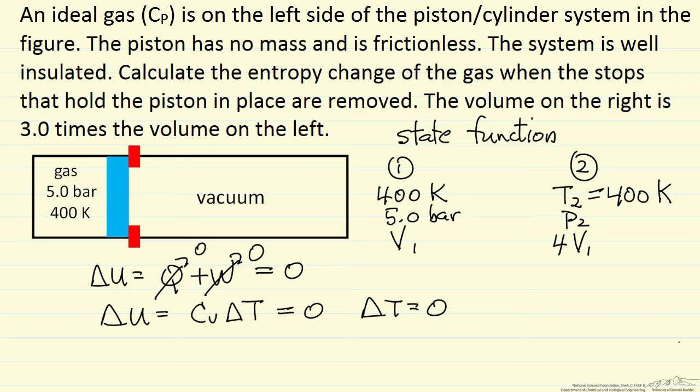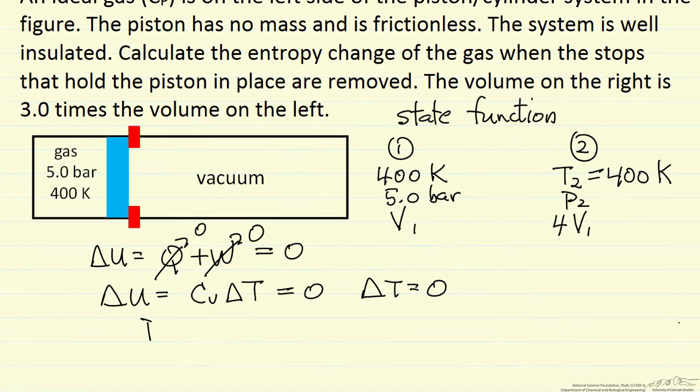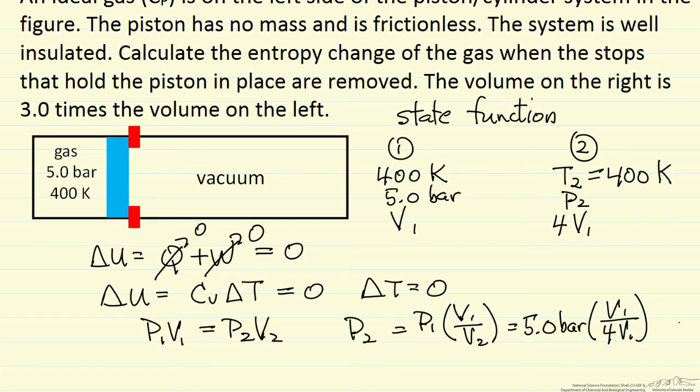Now we can apply the ideal gas law. We are at constant temperature, and what we are going to do is say P1 times V1 is P2 times V2, or P2 is just the initial pressure times initial volume over the final volume. Initially 5 bar, V1, final volume is 4 times V1, so our final pressure is 1.25 bar.